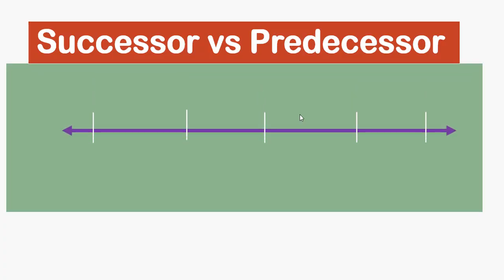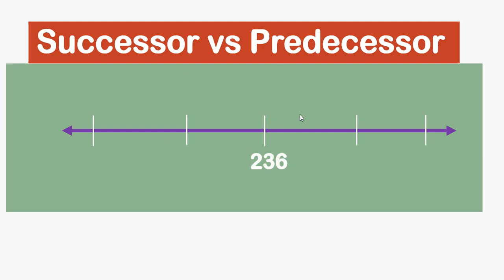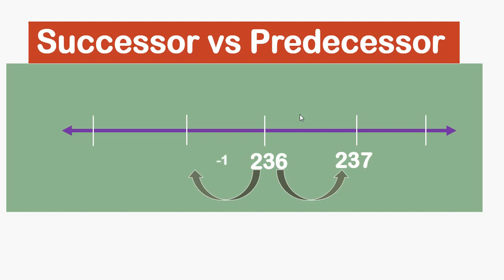Let us see the number line. If we take 236 as a number, when we add one to it we get 237, which is the successor of 236. In the same way, if we subtract one from 236 we get 235, which is the predecessor of 236.